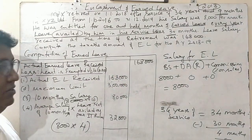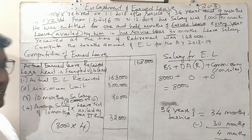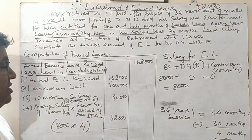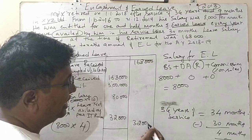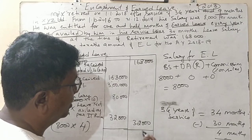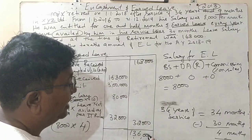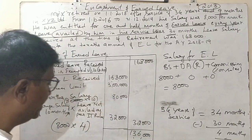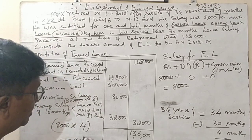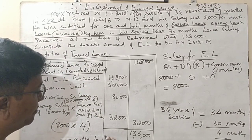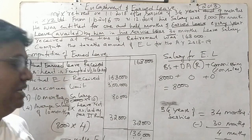Now we check which is the least of the four amounts: actual EL received is 1,68,000; maximum limit is 3,00,000; 10 months' salary is 80,000; and average salary into leaves not availed is 32,000. The least is 32,000. So exemption is 32,000, and taxable EL is 1,68,000 minus 32,000 equals 1,36,000 rupees.